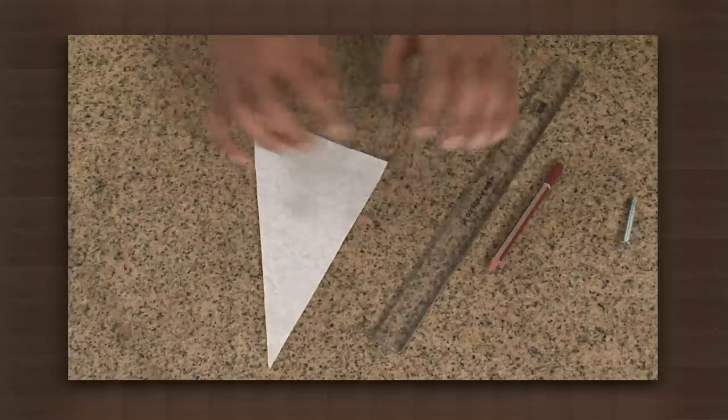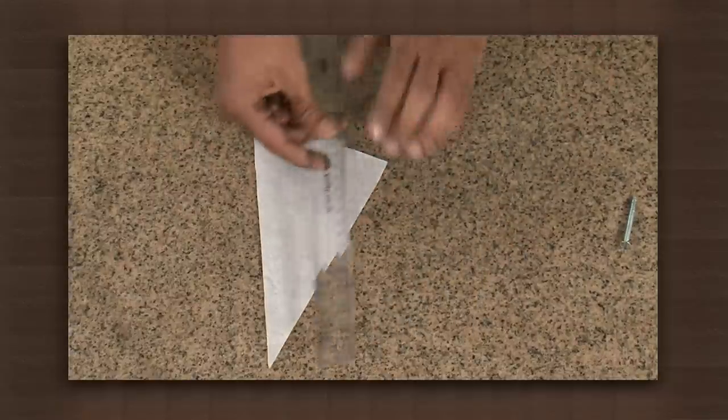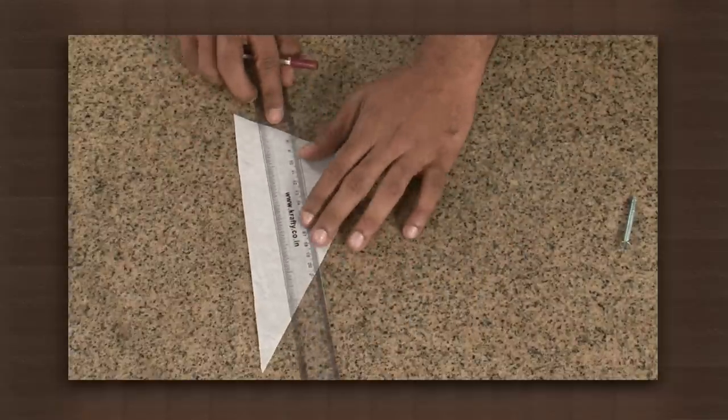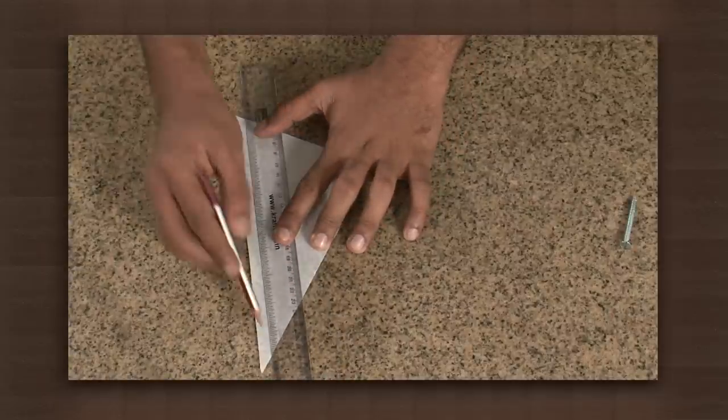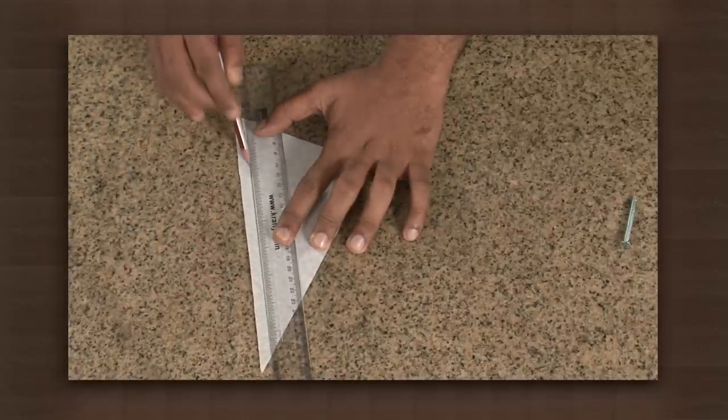Observe this triangular cutout. Isn't it an inclined plane? Now we will make lines parallel to the hypotenuse like this and keep this paper face down on the table.